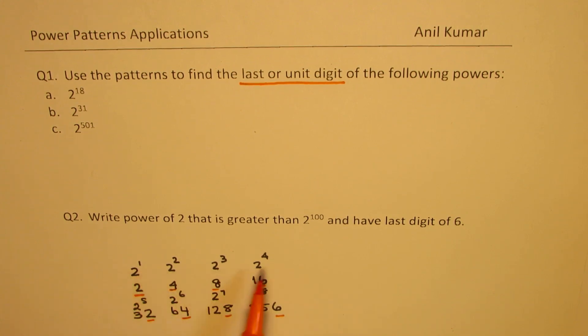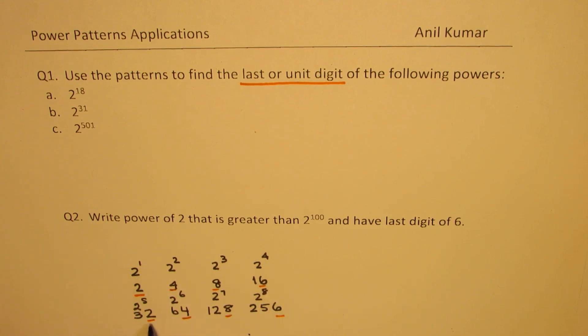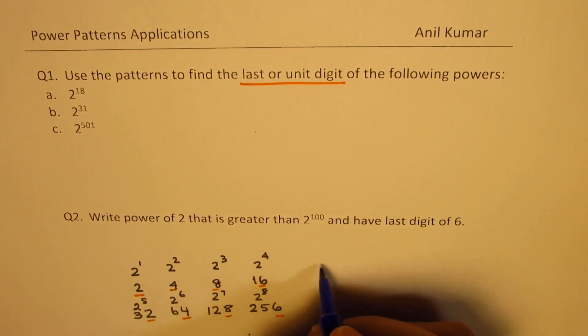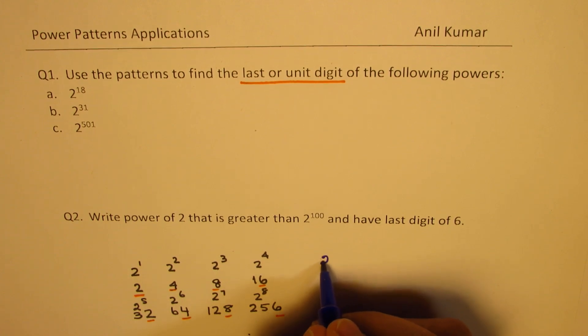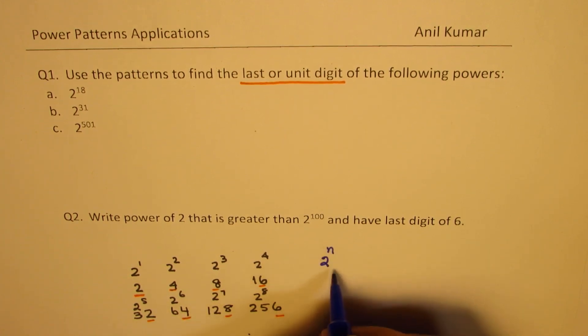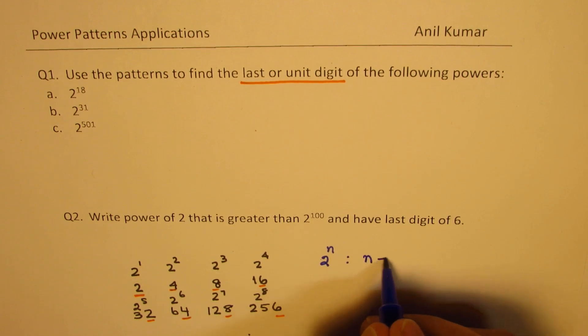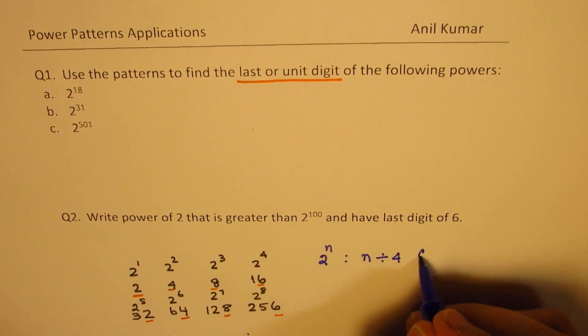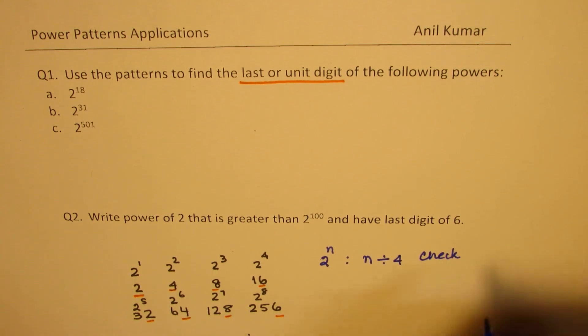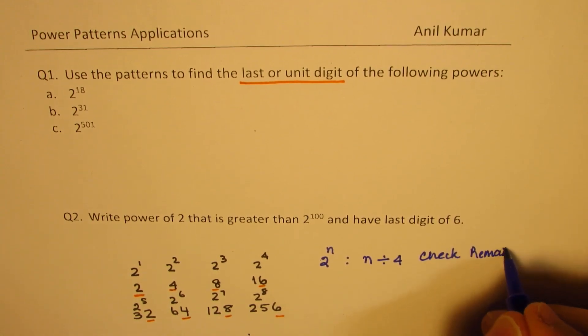So, if the power is a multiple of 4, in that case, the last digit is 6. But in case there is a remainder, then if the remainder is 1, then the last digit is 2. Do you see that? So, basically, it is based on remainder. So, whenever you have 2 to the power of n, then what we do here is that we will divide n by 4 and then check remainder.